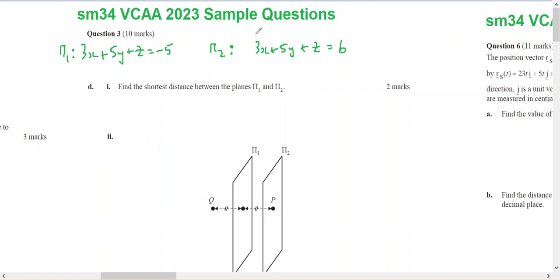So this is question 3 part d, part 1 and part 2. From the previous part of the questions we know that plane 1 is 3x plus 5y plus z equals negative 5, and plane 2 is 3x plus 5y plus z equals 6.